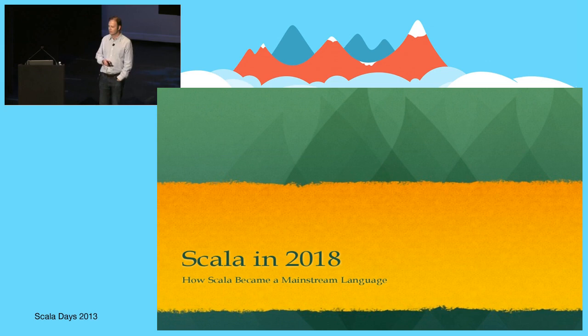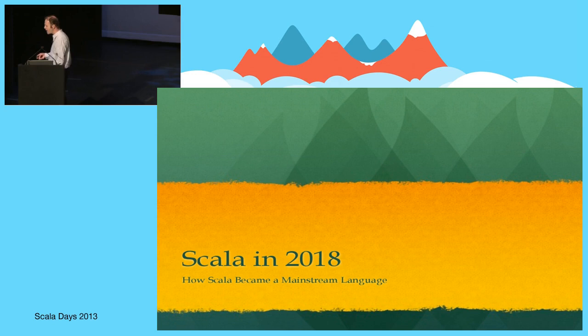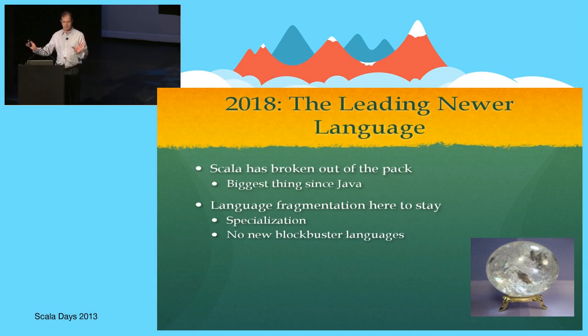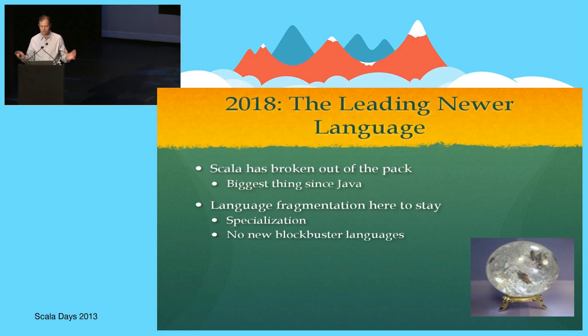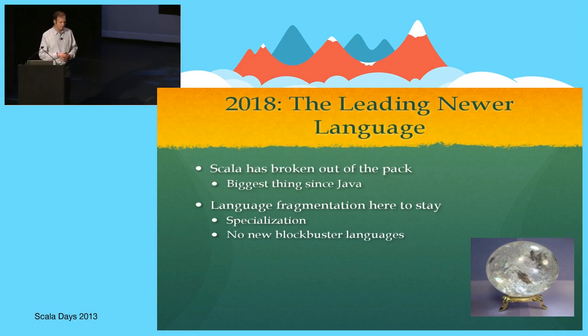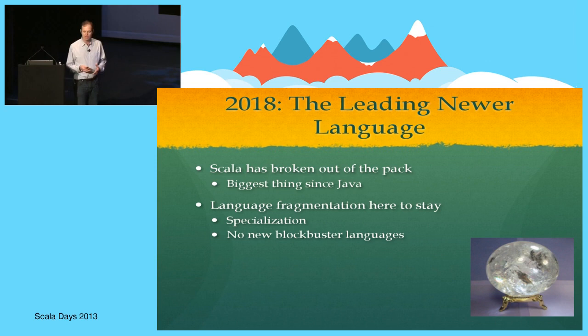This poem summarizes the key points of my presentation, which is about where I see Scala being in five years' time — where will Scala be in 2018? This is very much my opinion, and we'll see in five years whether I'm right or wrong. I believe that in 2018 Scala will be the leading newer language. I believe it is currently breaking out of the pack of so-called second-tier languages, and it will be the biggest thing since Java.